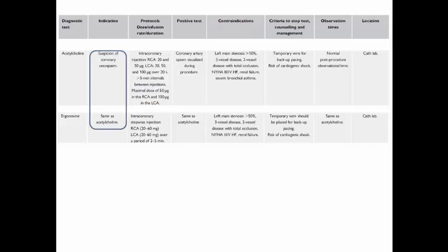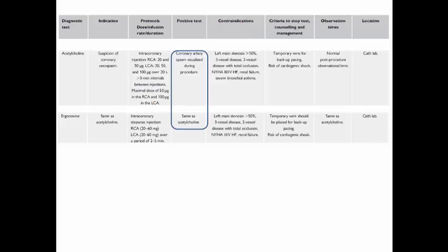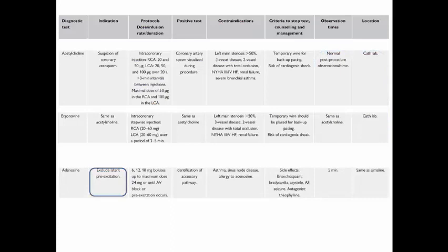Acetylcholine and ergonovine can be used to diagnose coronary vasospasm if suspected as a cause of ventricular arrhythmia or sudden cardiac arrest, given intracoronary in the cath lab. Positive results show coronary artery spasm visualized during the procedure. Contraindications include left main stenosis more than 50%, three-vessel disease, two-vessel disease with total occlusion, NYHA class 3 or 4 heart failure, renal failure, and for acetylcholine specifically, severe bronchial asthma. A temporary pacing wire should be available as AV block may occur with RCA vasospasm.